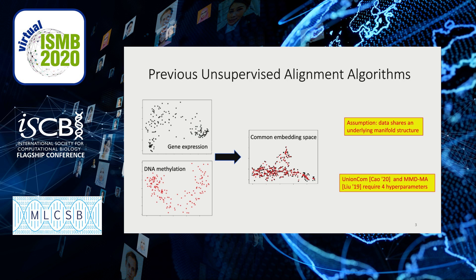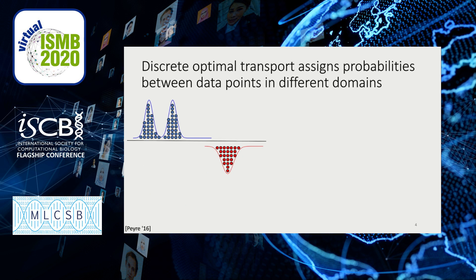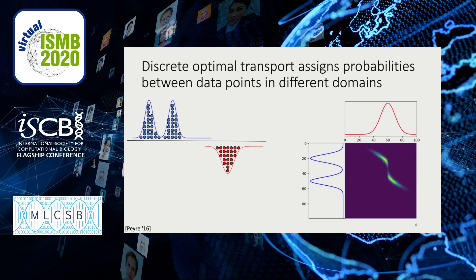Unfortunately, both of these methods have four hyperparameters to tune, which can be extremely difficult in this fully unsupervised setting. So our approach to this problem is instead to use optimal transport. Optimal transport generally looks at the problem of transforming one probability distribution into another through the least amount of work. You can think about this as looking at a bunch of sand piles and thinking how we can move the grains of sand efficiently to fill in a hole. We define probability measures on all of our data and then solve an optimization problem that tells us exactly how these two distributions should be related to one another.